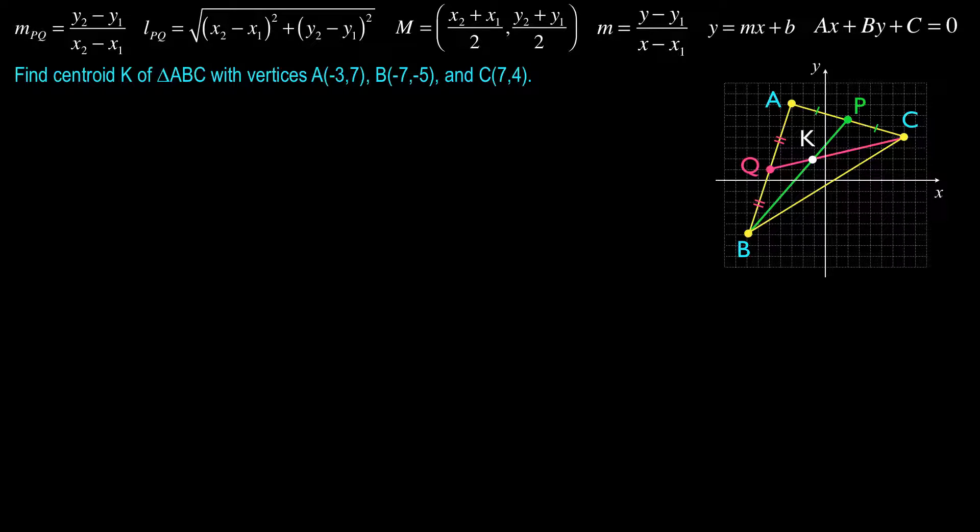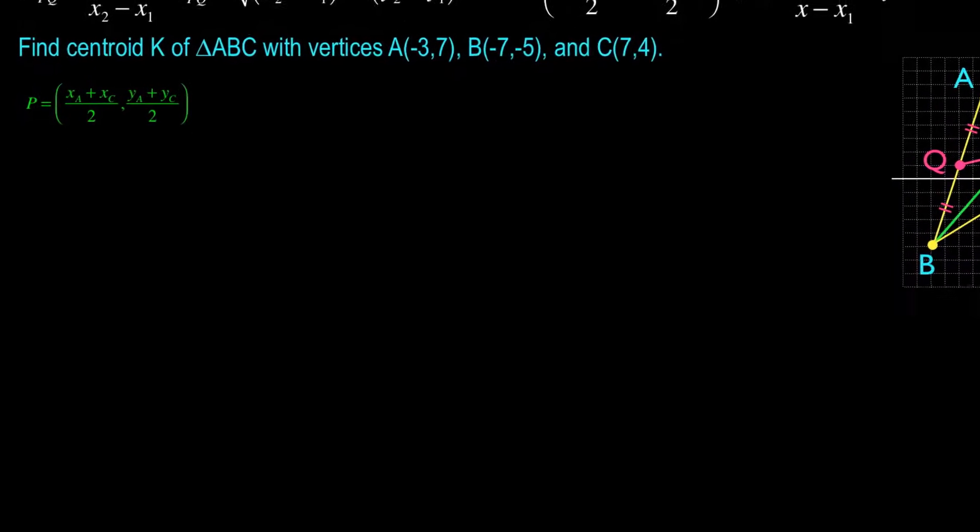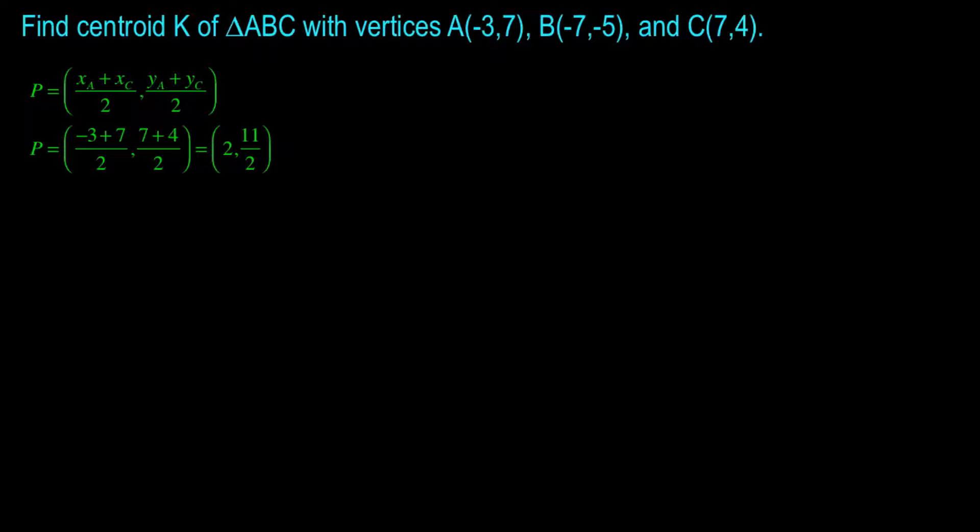With that, we'd have point P, we'd have point B, we could find the slope of BP, and with the slope of BP, and either point B or P, we can find the equation of the line. Better for you to watch me do it. Here we go. So the first thing I'm going to do is find point P, and I will do that by using my midpoint formula for points A and C. So XA plus XC over 2, YA plus YC over 2. Substituting in my coordinates, I get that P has coordinates 2 and 11 over 2.